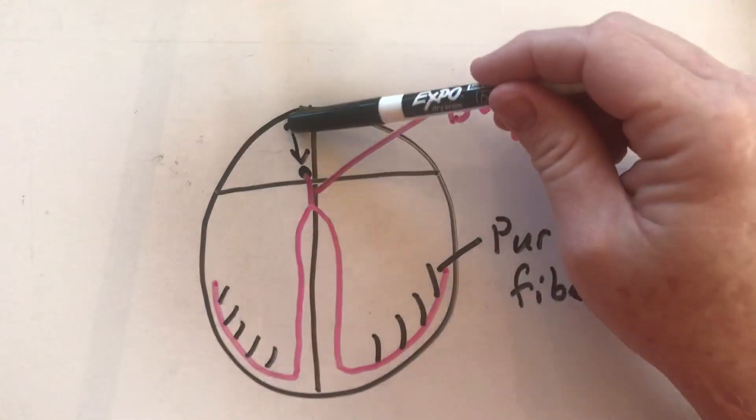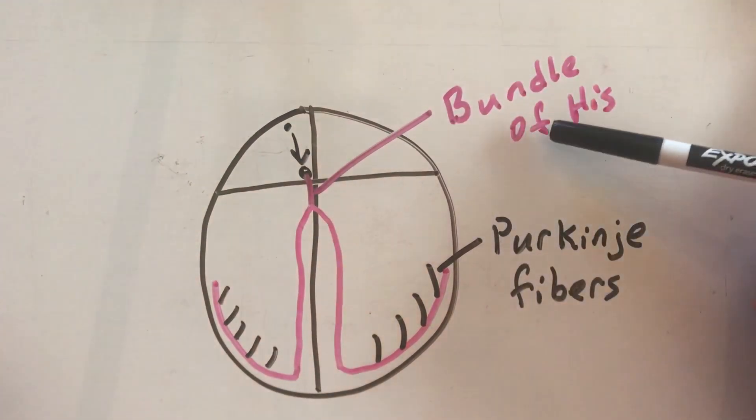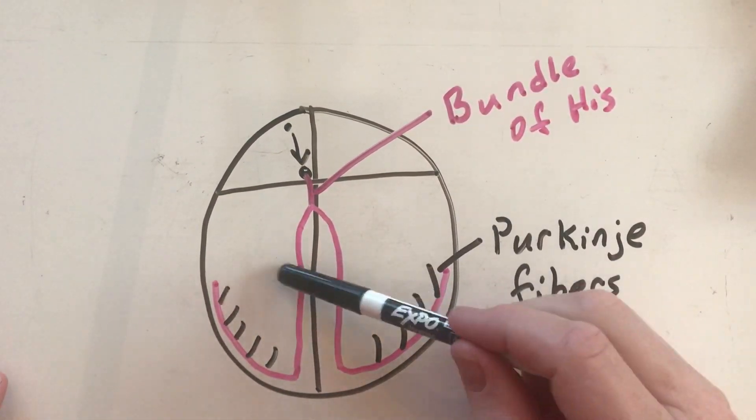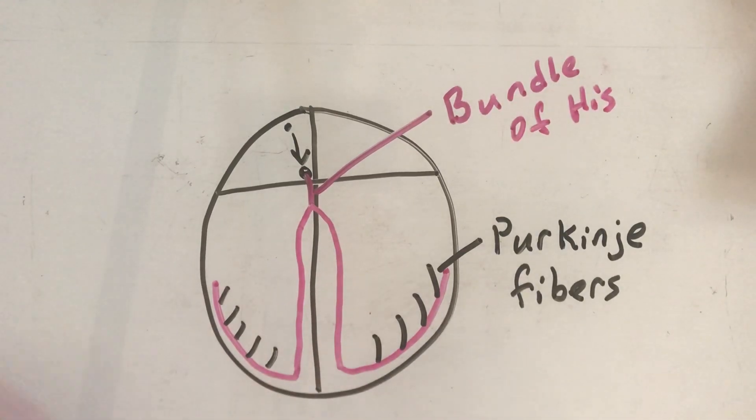So we've gone from the SA node to the AV node to the bundle of His, left and right bundle, and then to Purkinje fibers.